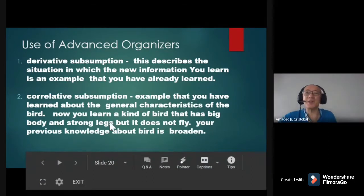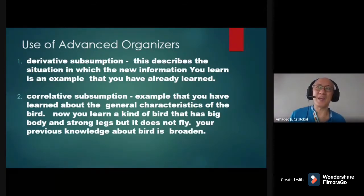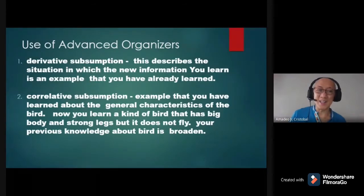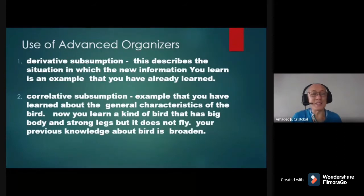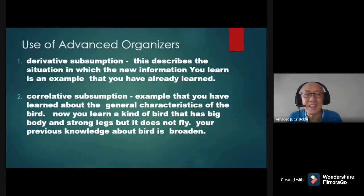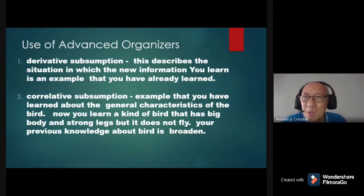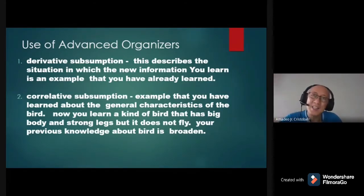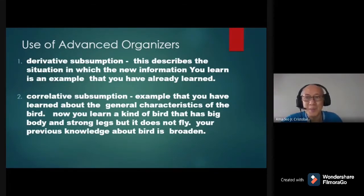Number two is correlative subsumption. For example, you have learned the general characteristics of a bird — that birds have feathers and birds can fly. Now you learn about a kind of bird with a big body and strong legs that does not fly. When you understand a concept and later learn new characteristics that extend it, that is called correlative subsumption.